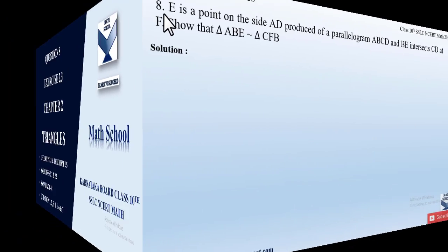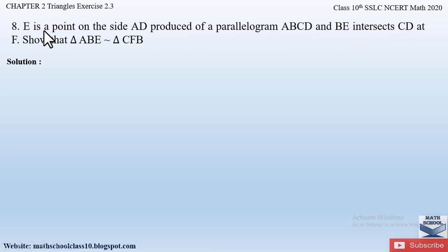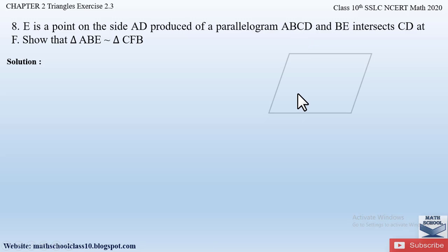Now let us begin with question number eight from Exercise 2.3, Chapter 2 Triangles. The question says: E is a point on the side AD produced of a parallelogram ABCD, and BE intersects CD at F. Show that triangle ABE is similar to triangle CFB. First of all, let us draw a parallelogram ABCD.